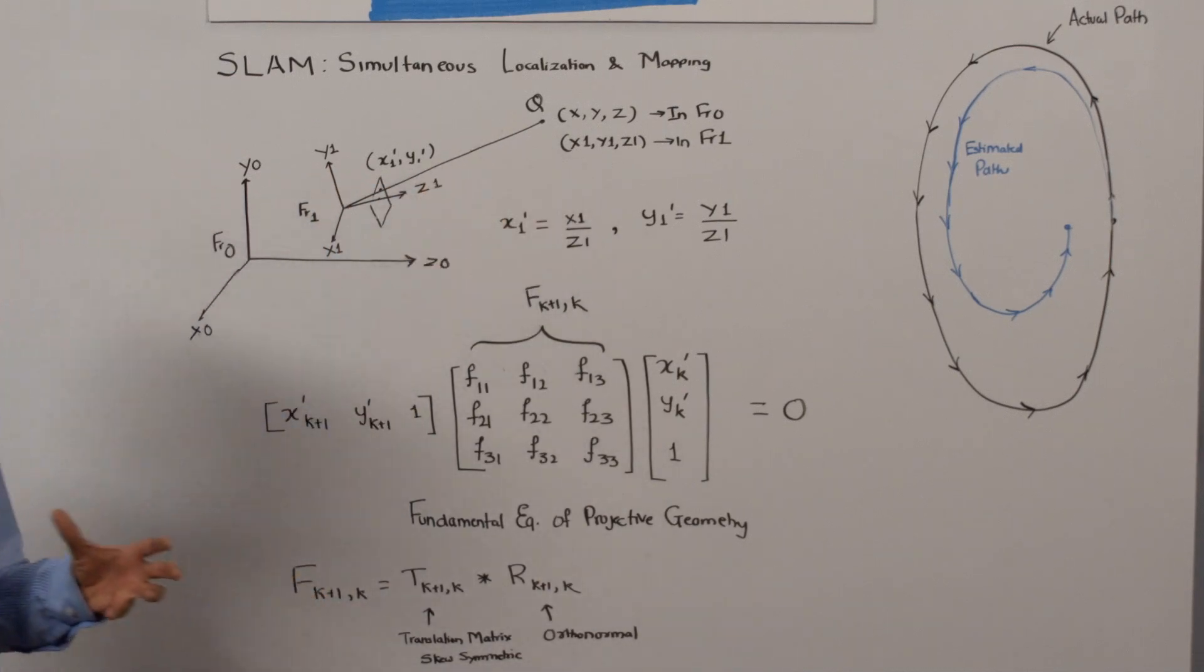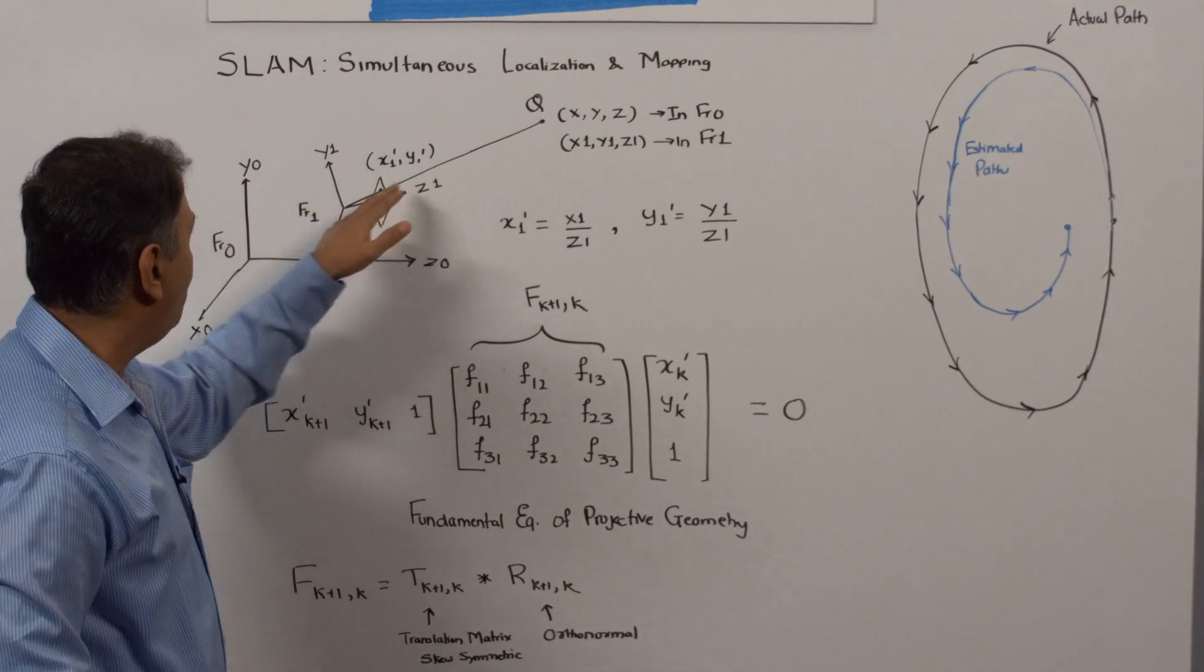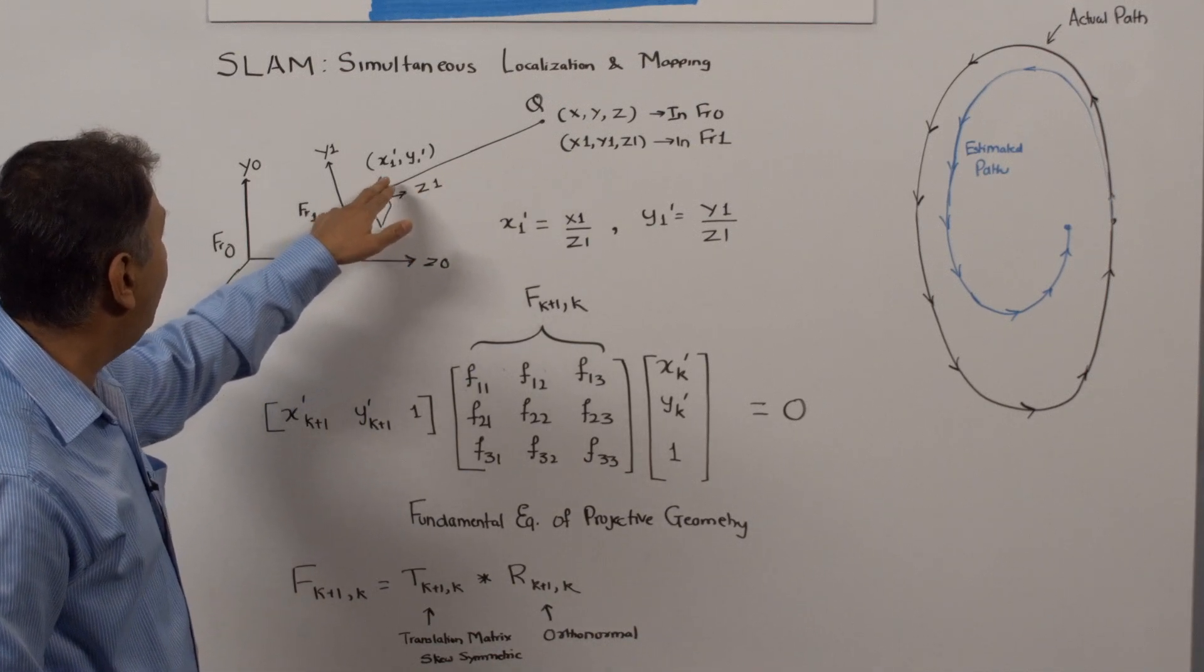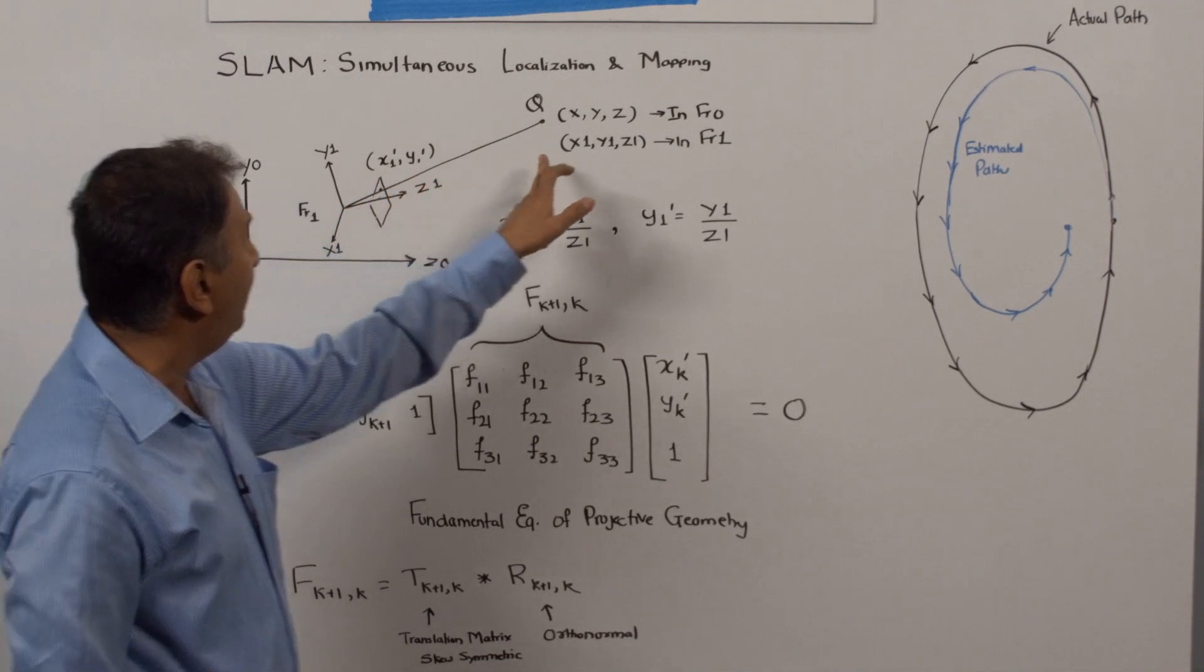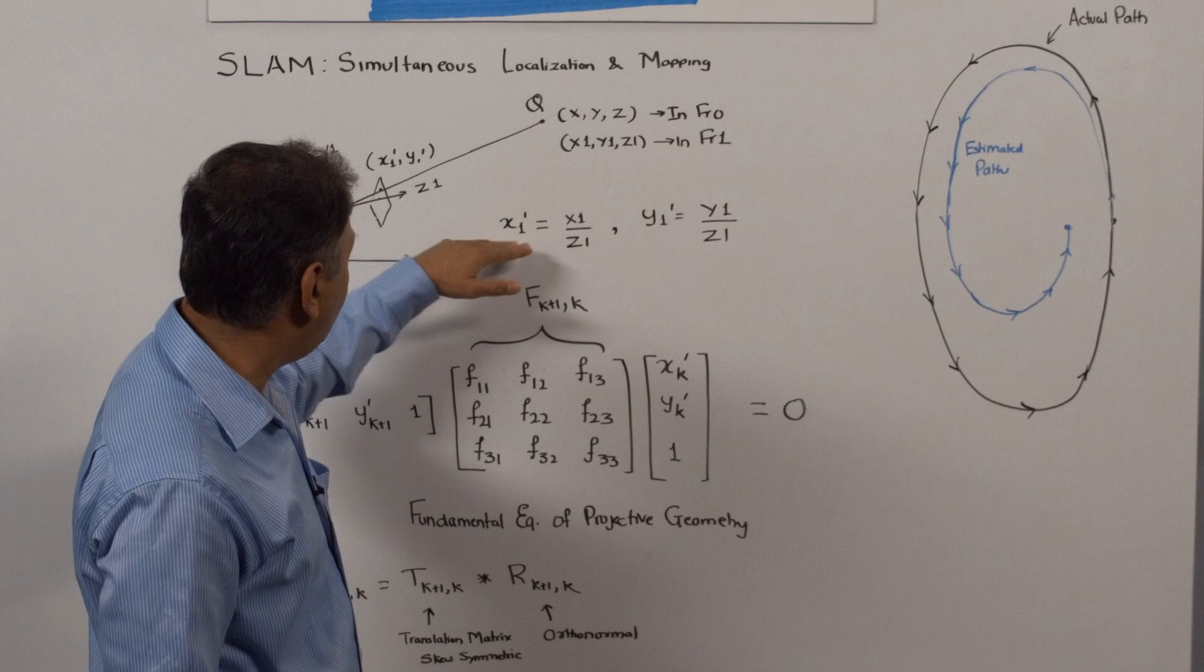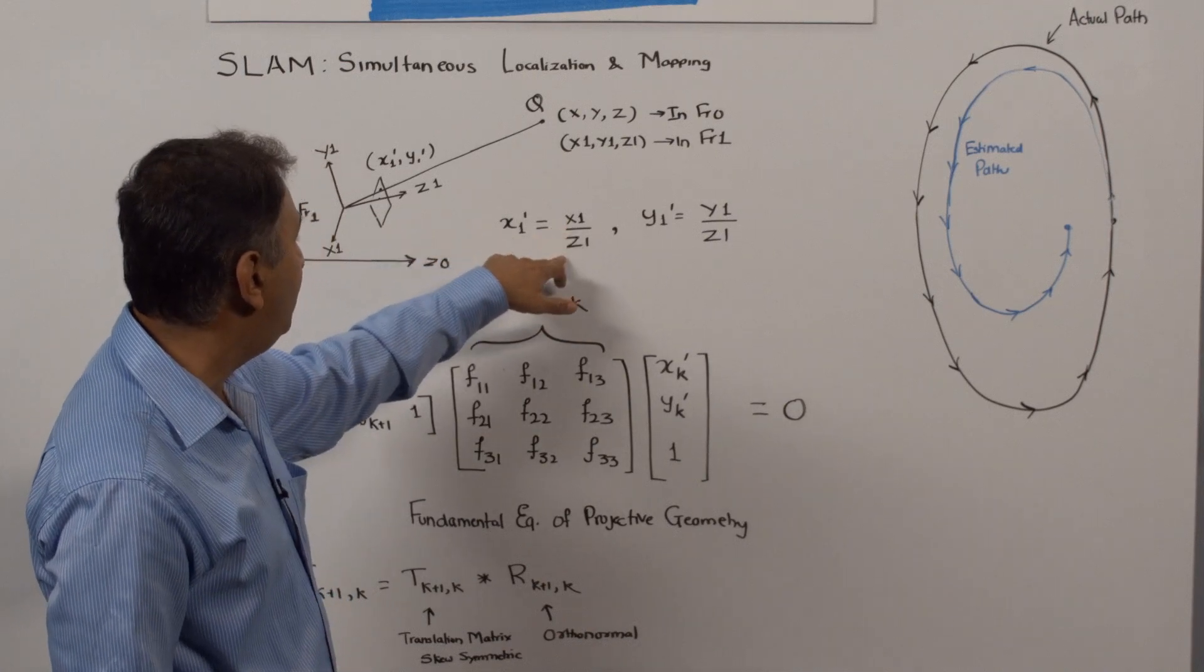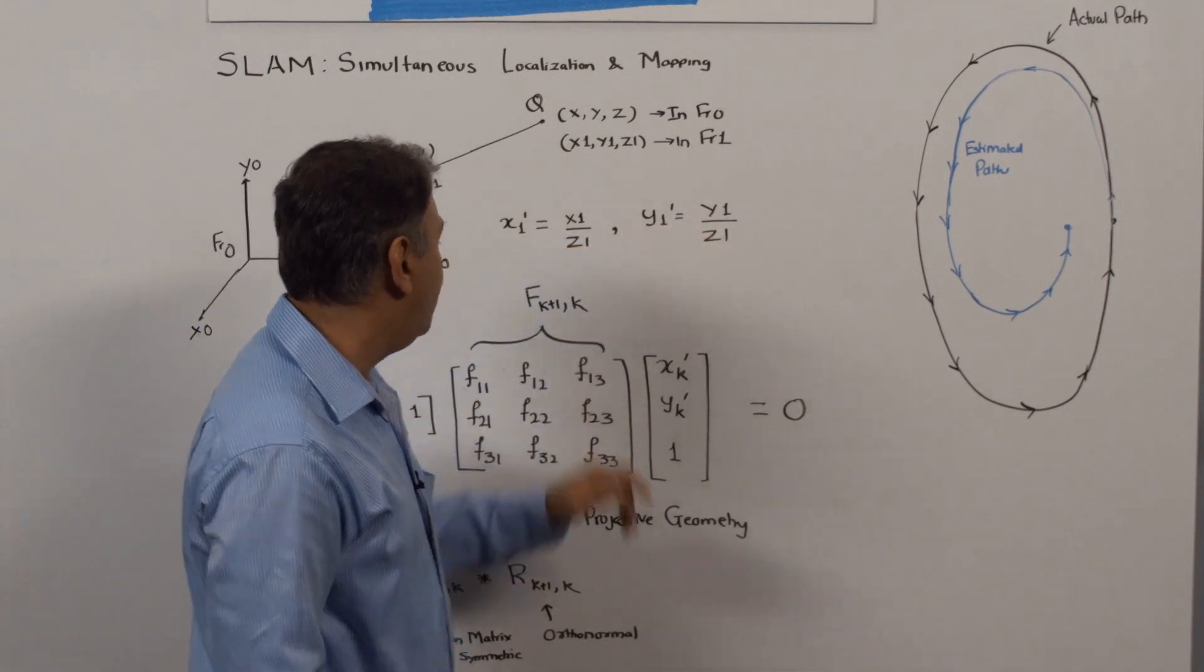What we end up actually capturing on the camera is not the global coordinates, but the projected coordinates x1 prime, y1 prime, which are related to the global coordinates by a simple equation: x1 prime is x1 upon z1, and y1 prime is y1 upon z1.